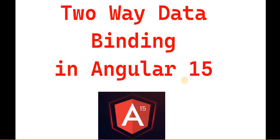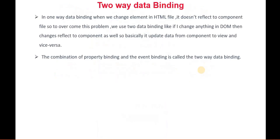In the previous videos, we discussed about the one-way data binding and we saw different types of one-way data binding like string interpolation, property binding, event binding, and attribute binding. So before proceeding with this video, I recommend please watch those previous videos where we discussed about the one-way data binding.